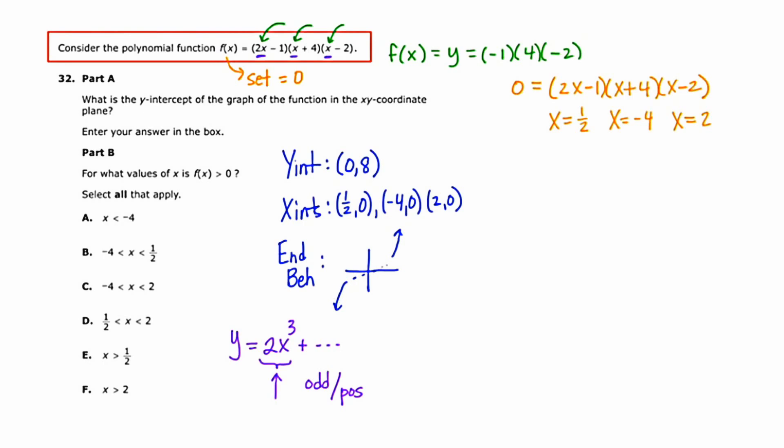What I'm going to do now is set up some axes to quickly sketch this. So let me start by plotting my y-intercept at 8. One of my x-intercepts is at 1/2. Another one's at -4, and my third one is at 2.